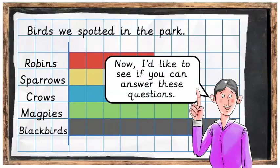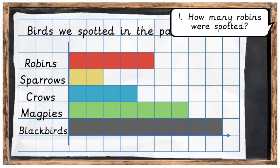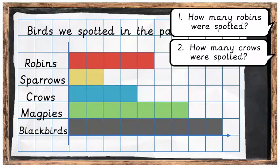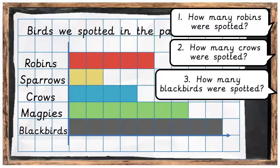Now I'd like to see if you can answer these questions. The first question is: how many robins were spotted? The second question is: how many crows were spotted? And the third question: how many blackbirds were spotted? Press pause, see if you can answer these questions, then press play when you are ready.